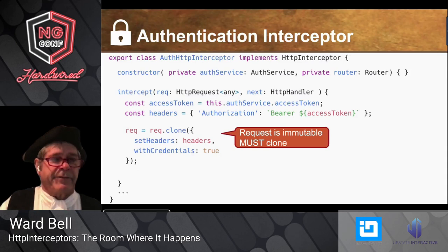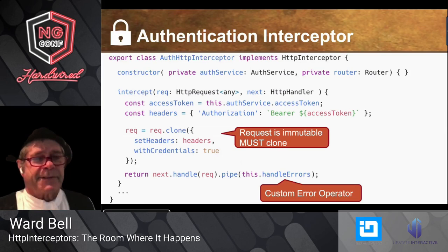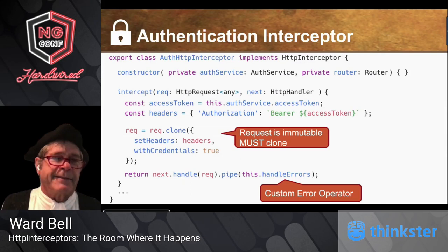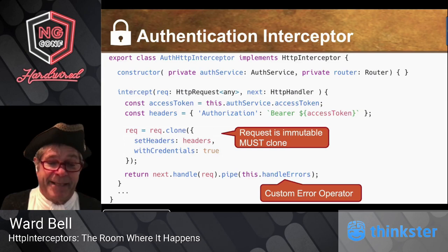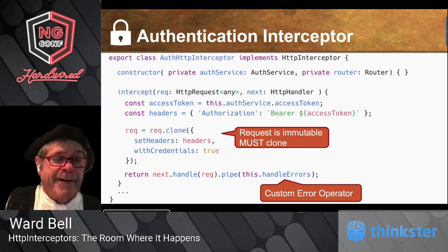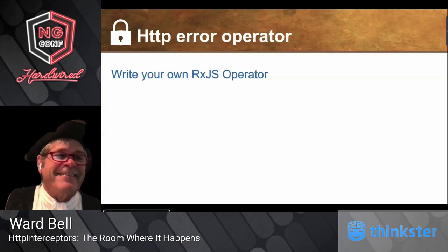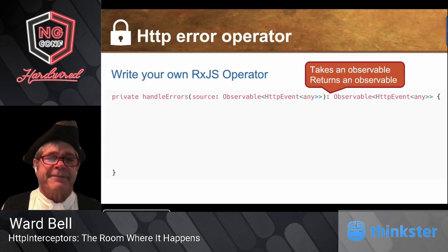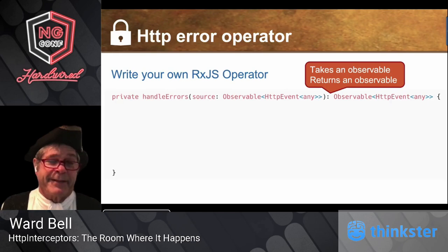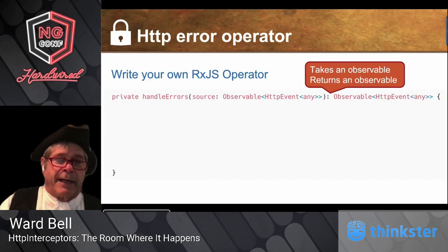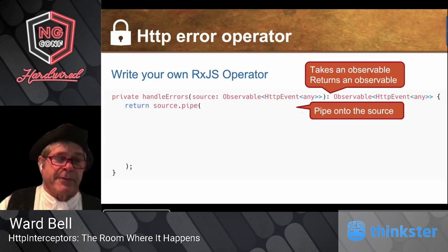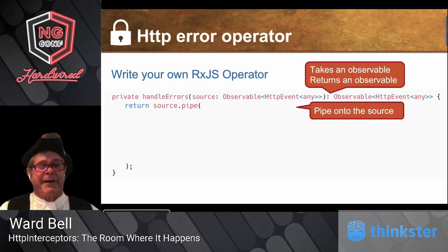Now we're ready to return the handle, but I want to handle errors without jamming it all into the intercept method — I can delegate to another method. In fact, it's not just another method, it's an operator. We're going to create our own RxJS operator. An operator is simply a function that takes an observable in and puts an observable out. It's really not hard: you take the source, pipe onto it, and apply whatever RxJS skills you have.